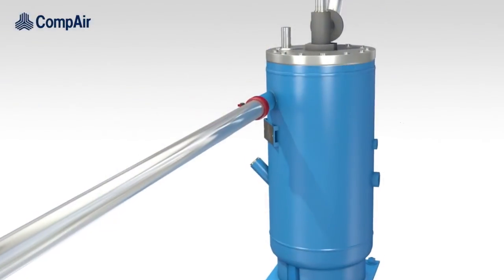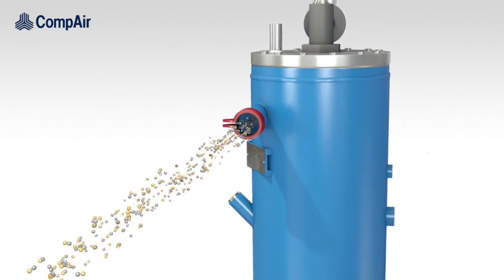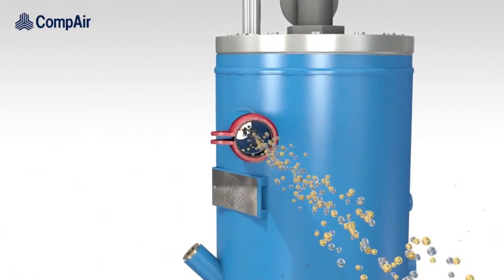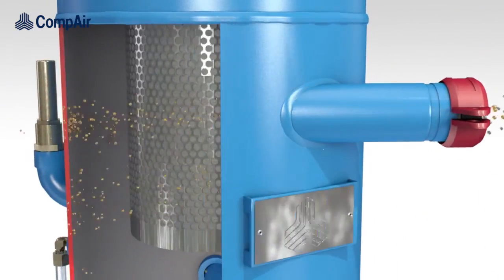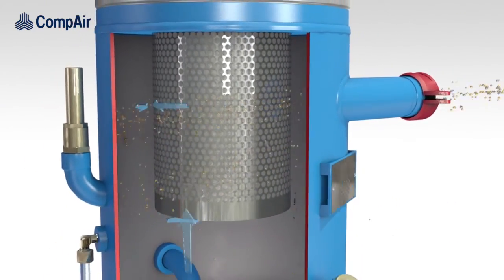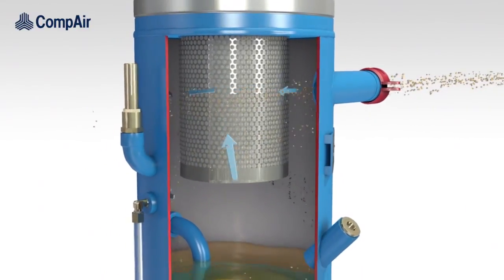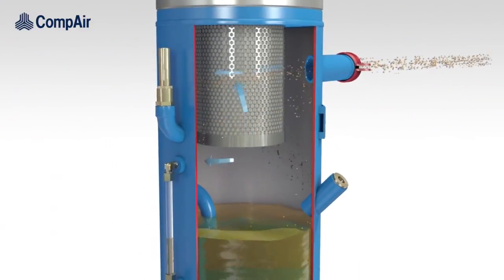The second component is the air oil separator which removes the majority of the oil from the air. The compressed air containing oil is directed into the oil reservoir and rotates around the air oil separator. This cyclone effect provides the initial air oil separation.